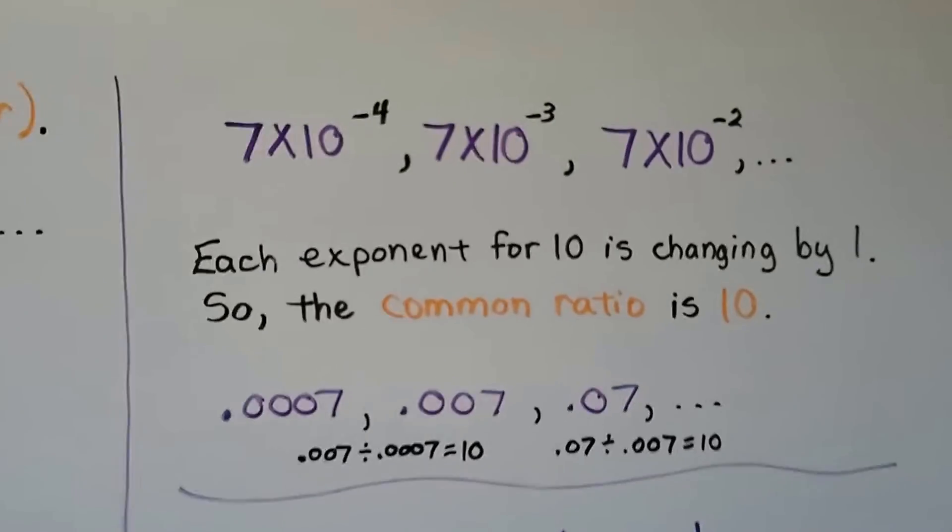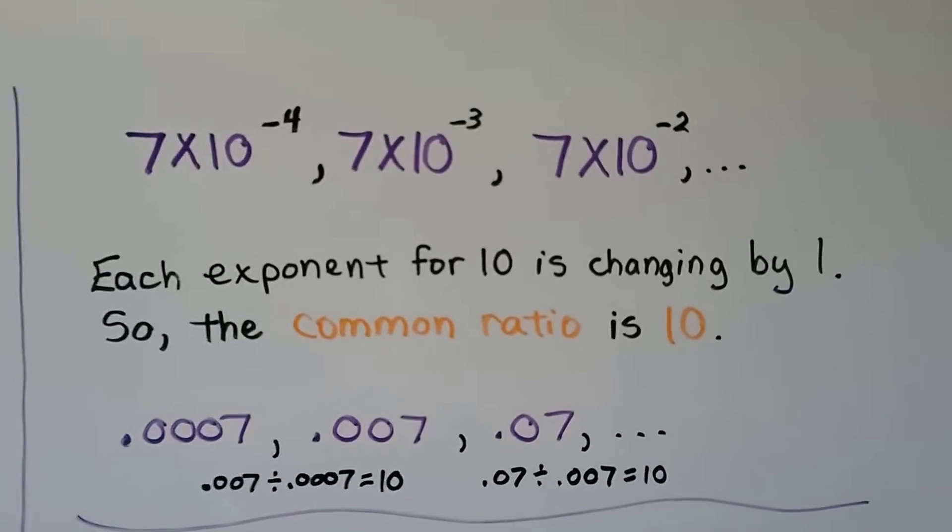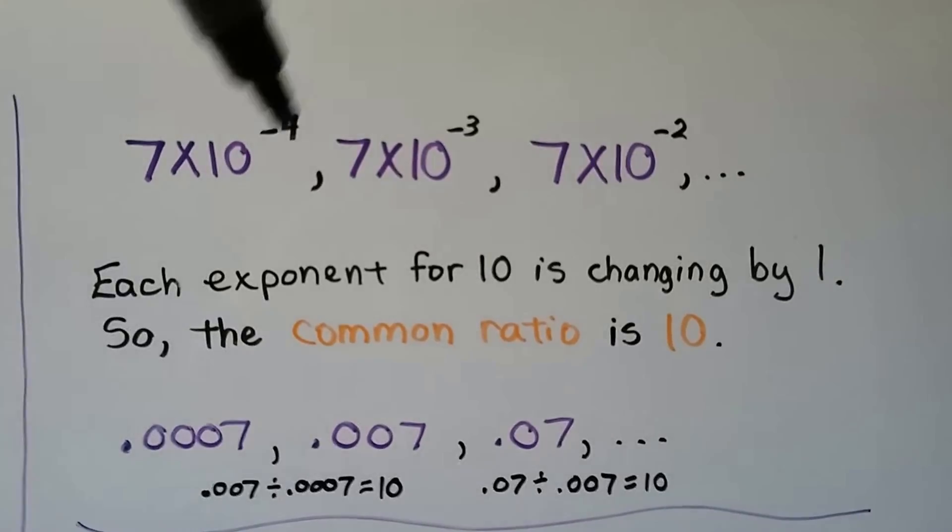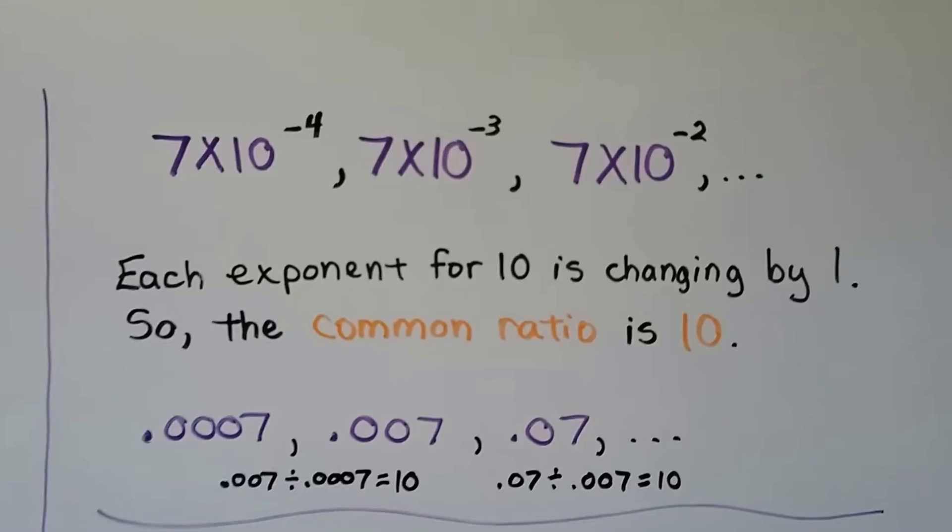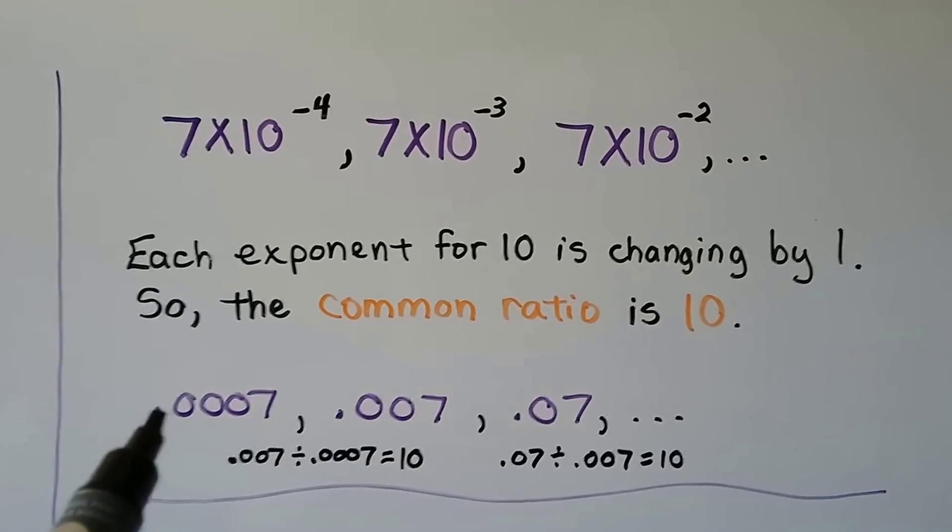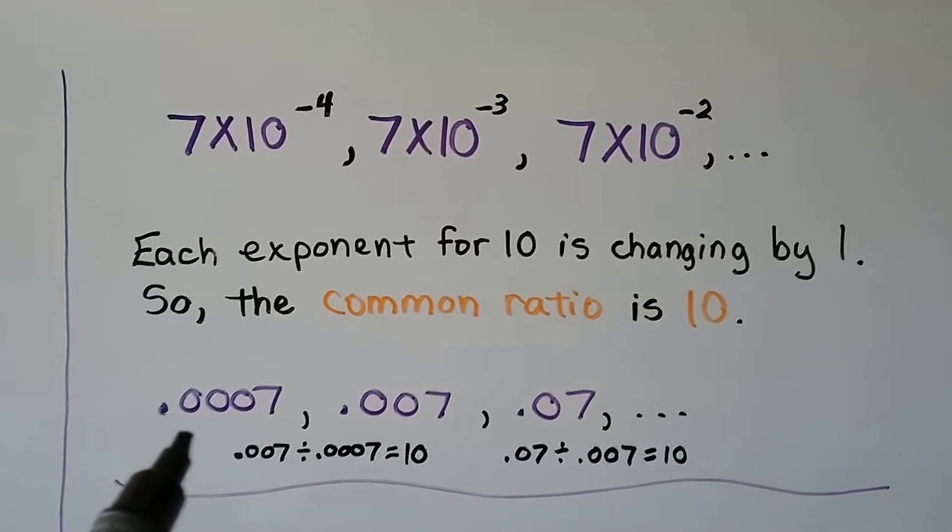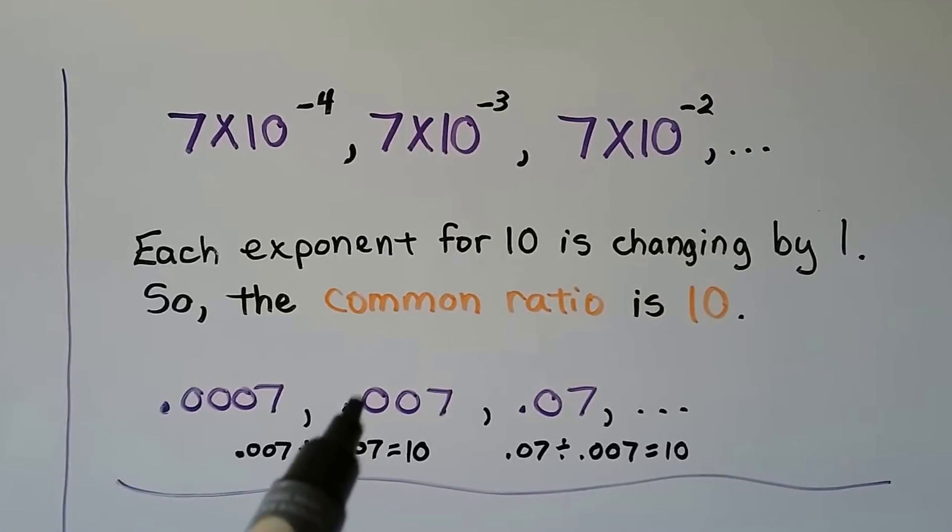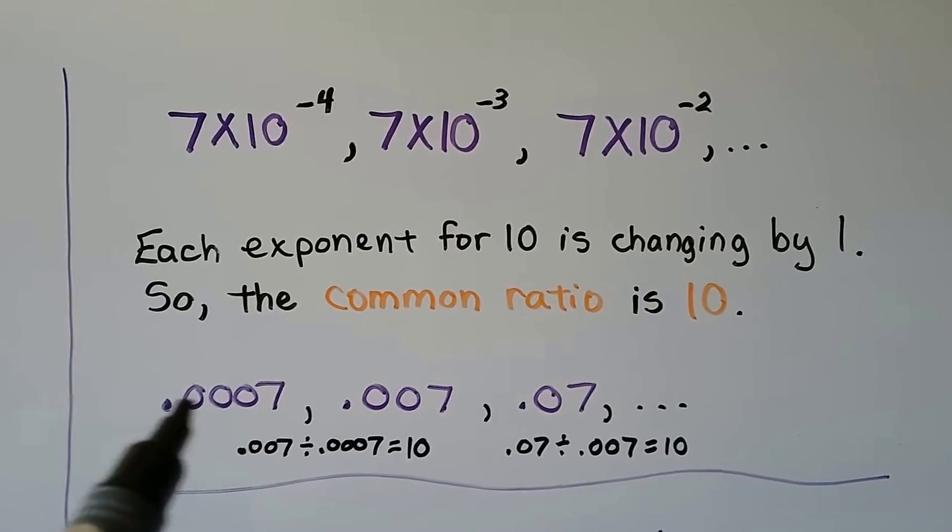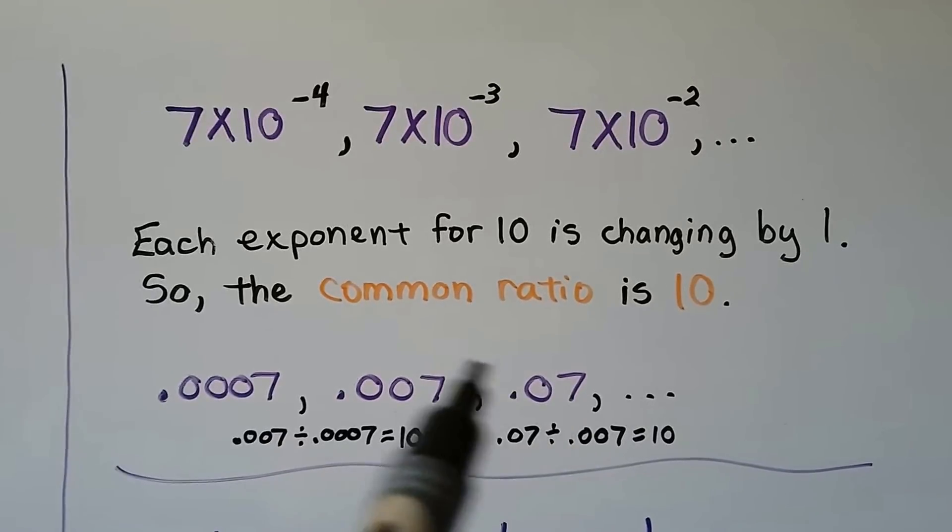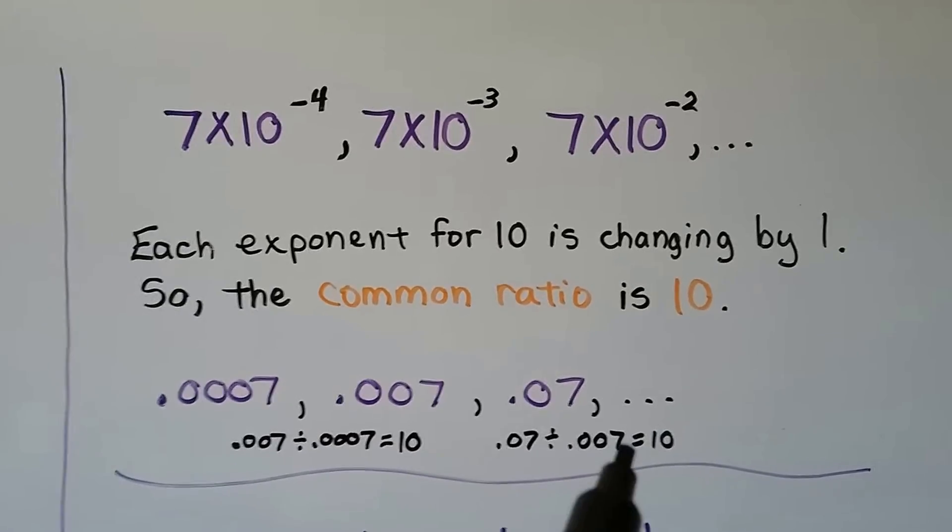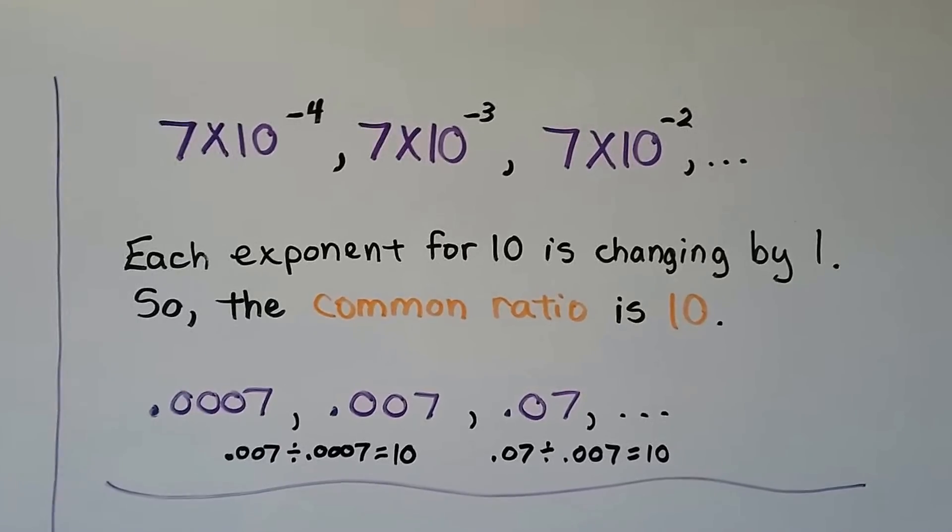This one looks a little bit different. We have scientific notation. Each exponent for 10 is changing by 1. We're going from negative 4 to negative 3 to negative 2. So the common ratio is 10. If we were to write this out in standard form as a decimal, we'd get 0.007 divided by 0.0007, that's 10. 0.07 divided by 0.007, that's 10. The common ratio is 10.